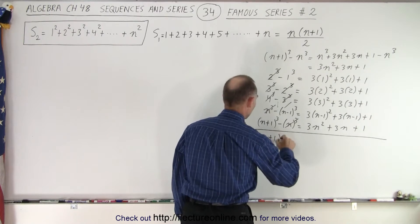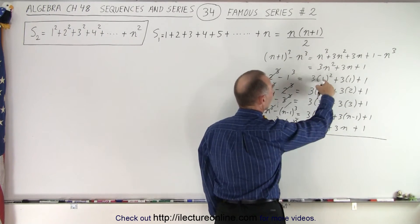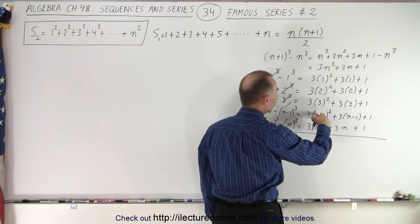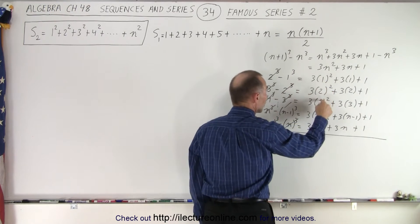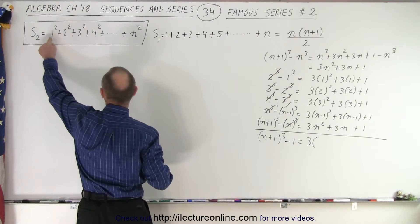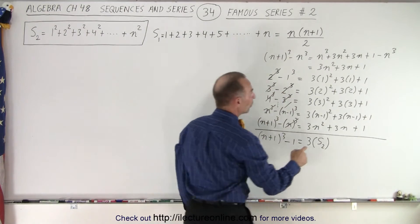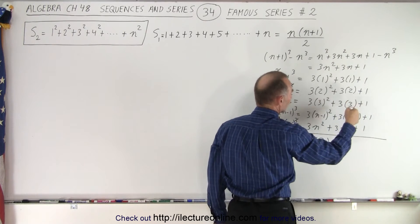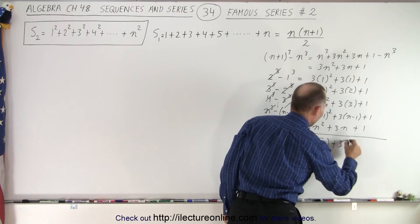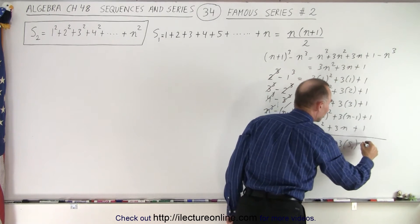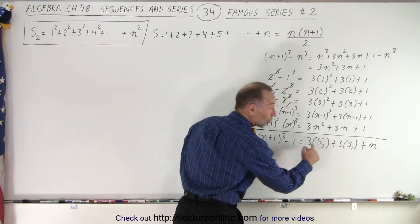On the left side we end up with n plus 1 cubed minus 1, because 1 cubed is 1. On the right side, notice we have 3 times the sum of 1 squared plus 2 squared plus 3 squared all the way up to n squared — that's 3 times S2 — plus 3 times the sum 1 plus 2 plus 3 up to n, which is S1, and then plus n. So n plus 1 cubed minus 1 equals 3·S2 plus 3·S1 plus n, and we want to solve for S2.